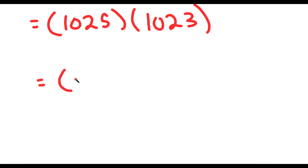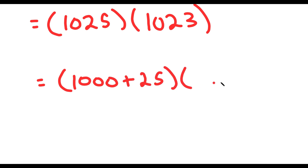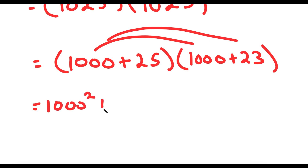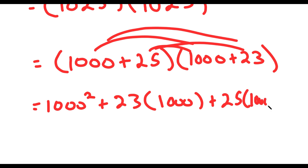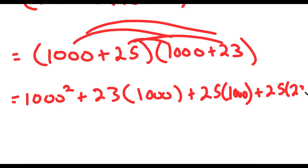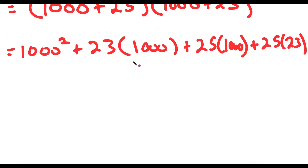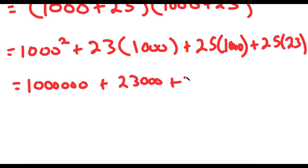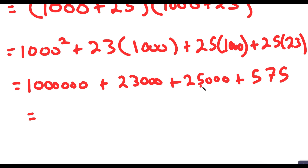Instead, I'm going to rewrite this as 1,000 plus 25 times 1,000 plus 23. Distributing the 1,000 gives 1,000 squared plus 23 times 1,000, and distributing the 25 gives 25 times 1,000 plus 25 times 23. Now, 1,000 squared is 1,000,000, so I have 1,000,000 plus 23,000 plus 25,000 plus 575. That gives 23,000 plus 25,000 equals 48,000, and 48,000 plus 575 is 48,575, and adding 1,000,000 gives 1,048,575.